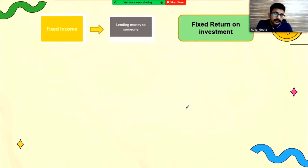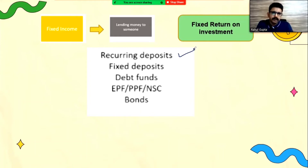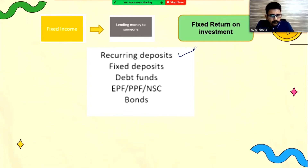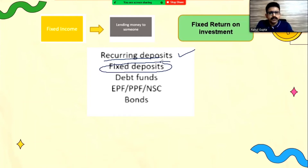What are the fixed deposit instruments we have in the market? One is called a recurring deposit — every month you are depositing some amount, like 500 or 1000 rupees, over a period of some years. For example, 5 years if you deposit in a post office or in a bank. The second is called an FD — if you have, say, 50,000 rupees, you do an FD of that and a fixed amount of return is going to be generated.